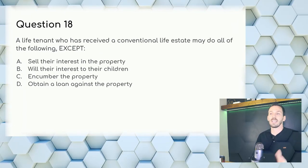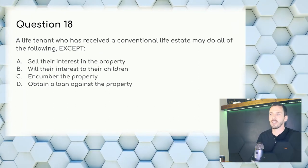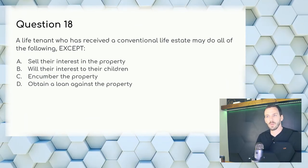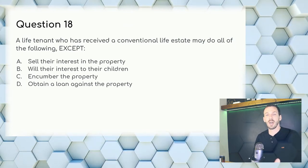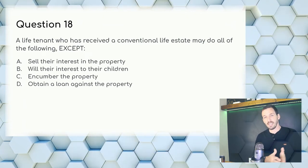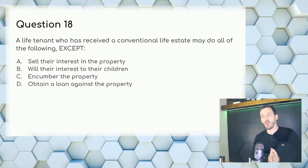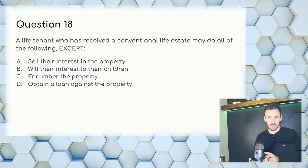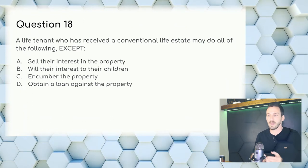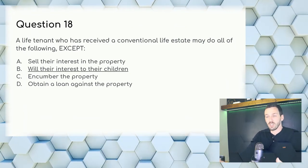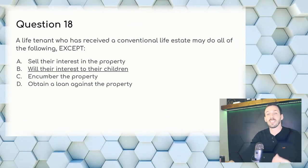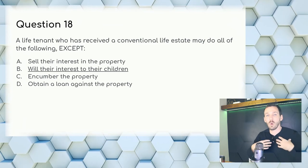Question 18: A life tenant who received a conventional life estate may do all of the following except — when a life tenant dies, the property reverts back to the owner or remainder interest. A life tenant can't just pass it on to whoever they want. Answer: B — will their interest to their children. A life tenant cannot will this to their children because the contract is based off of that tenant's own life.